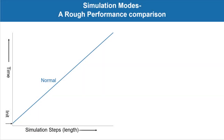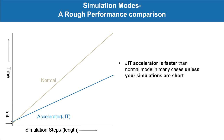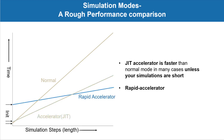Now that we've seen how these modes work, a quick performance comparison: the accelerator mode is usually faster than normal mode unless your simulations are short. Rapid accelerator has the least per-step simulation execution overhead but the most initialization overhead. There are also trade-offs you need to keep in mind.